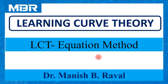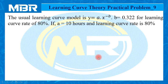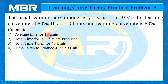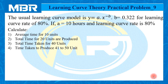Let us understand the question first. The usual learning curve model is y equals to a multiplied by x raised to minus b, where b equals to 0.322 for a learning curve rate of 80%. If a is equal to 10 hours and the learning curve rate is 80%, calculate: average time for 10 units, total time for 20 units produced, total time taken for 40 units, and time taken to produce units 41 to 50.